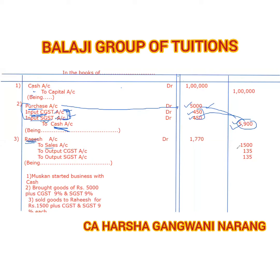The debit was 1,770. When we sold the goods, we charged the customer 1,500 rupees plus 9% GST. We charged 9% CGST — output CGST 9% = 135, and output SGST 9% = 135. So when we sold the goods, we received 135 and 135 as GST.